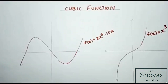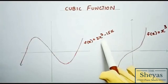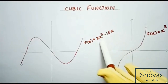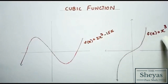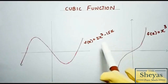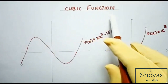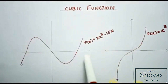These are examples of graphs of cubic functions. The highest power of x here is 3, and here also the highest power of x is 3. If the highest power of x is 3, then we call that a cubic function.